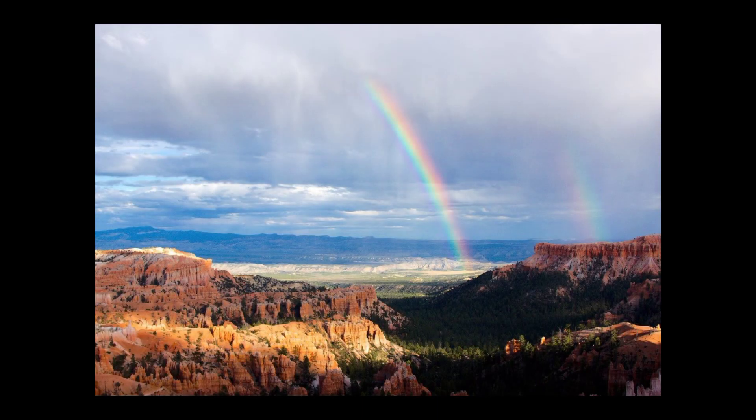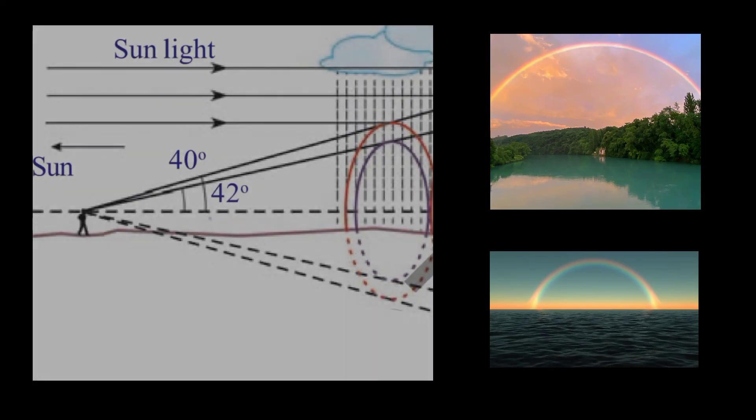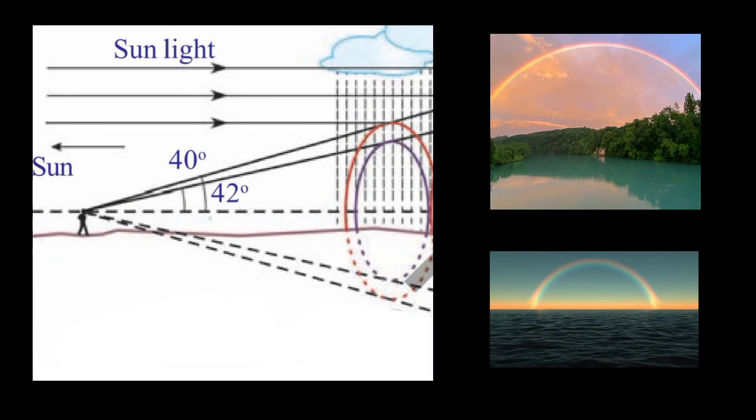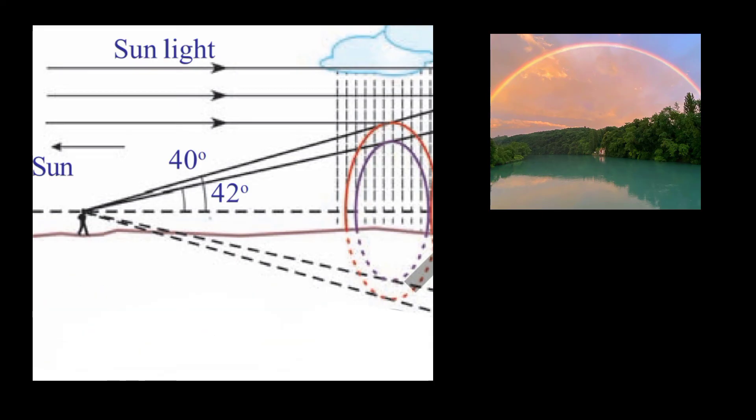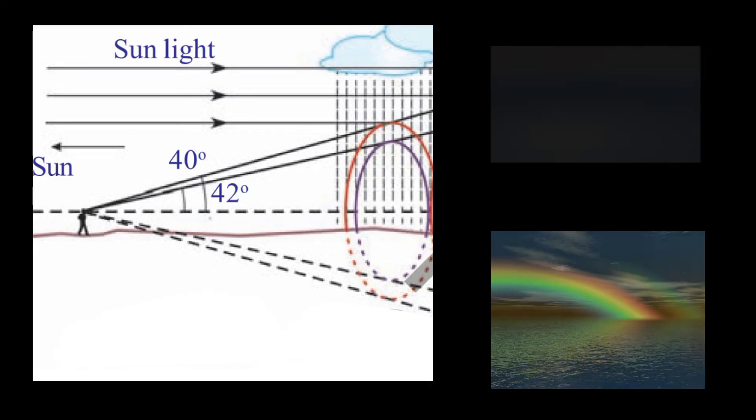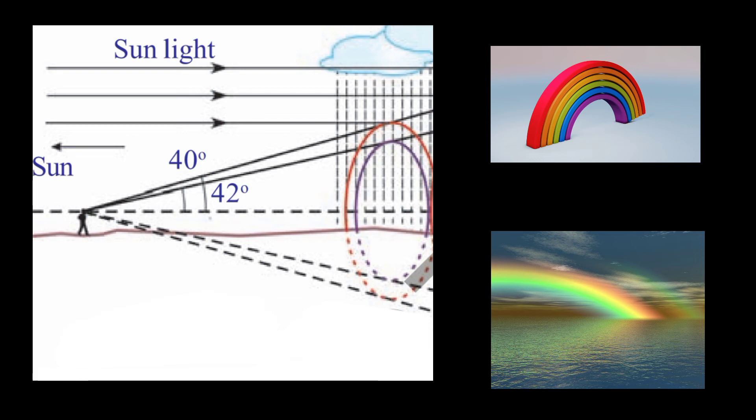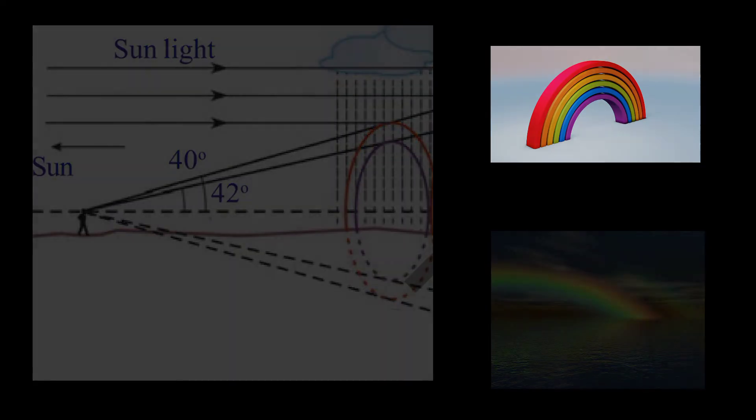The rainbow we see is actually a three-dimensional cone. Our eye is at the tip of the cone. The drops that disperse red color to our eye are on the outermost layer of the cone. Similarly, the drops that disperse orange color to our eye are on the layer of the cone beneath the red color cone. In this way, yellow lies beneath orange and so on. The violet color cone becomes the innermost cone.